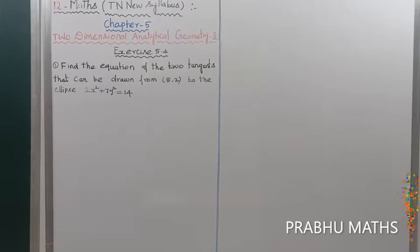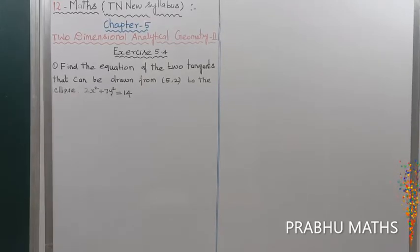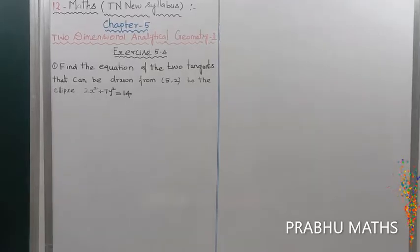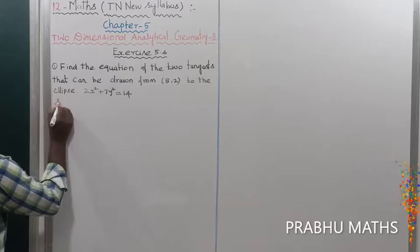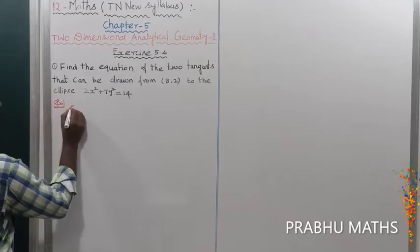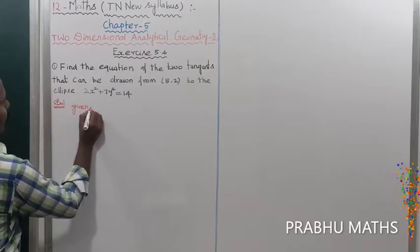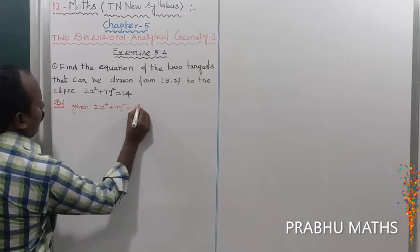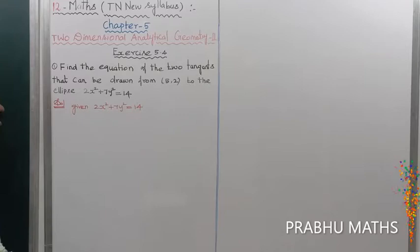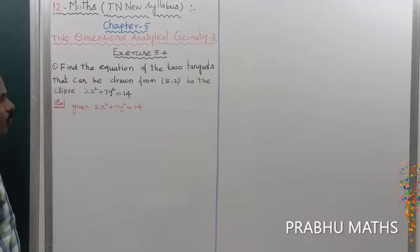The problem is to find the equation of the two tangent lines that can be drawn from the point (5, 2) to the ellipse 2x² + 7y² = 14. That is the given ellipse, so first of all the given ellipse is 2x² + 7y² = 14.